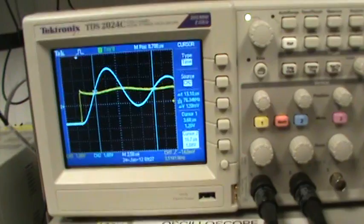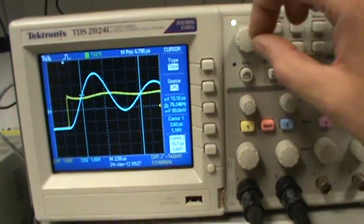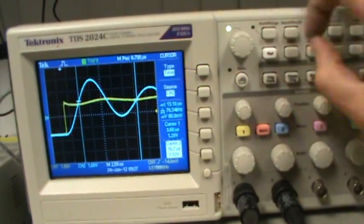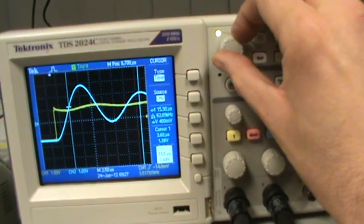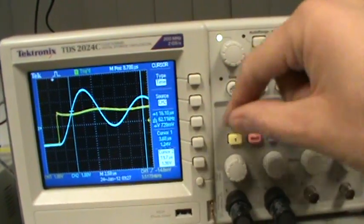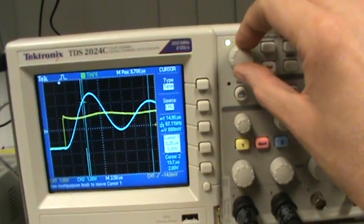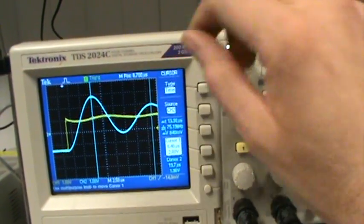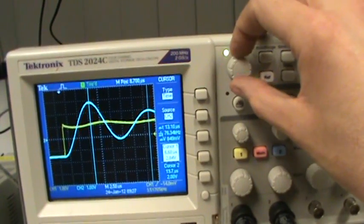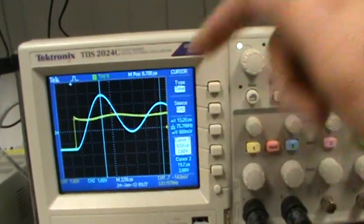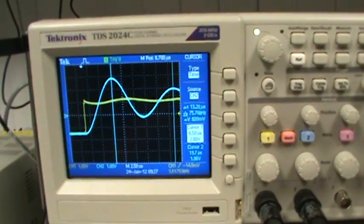So that's how we get the frequency of the undamped system. The other way we can do it, which isn't quite as accurate, is we can move this cursor to this peak and this cursor to this peak. So now we're measuring the time between successive peaks, and we get basically around the same information.